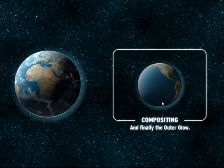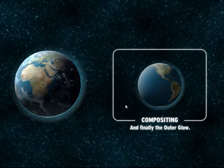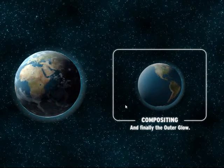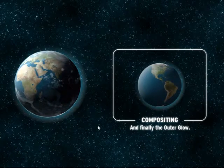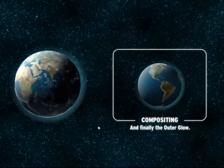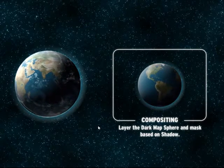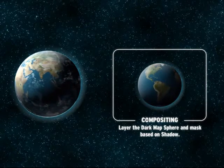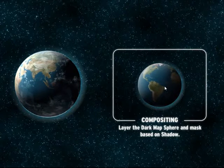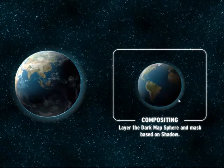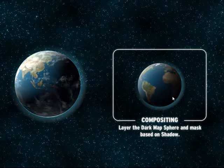We have our planet texture-mapped with a bit of shading to give it more of a sphere look. It's not quite the visual effect we're going for, and that's where the other spheres come in. We layer a dark map sphere and mask it based on the shadow — wherever the shadow gradient is, we allow the dark map to pass through; otherwise, it's the color map.